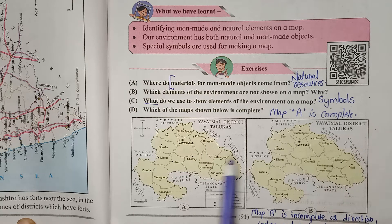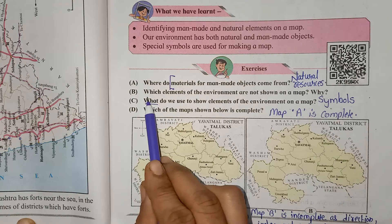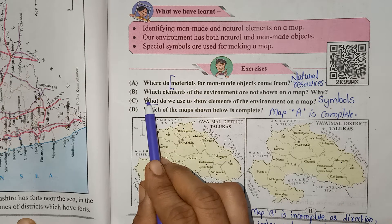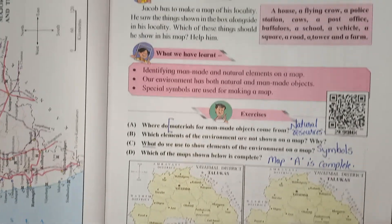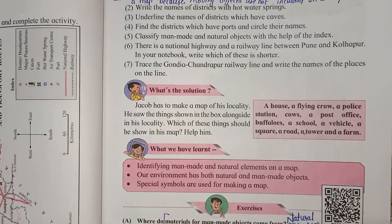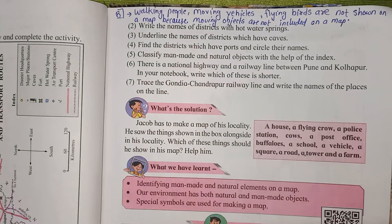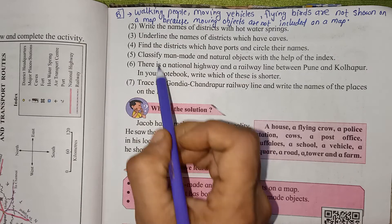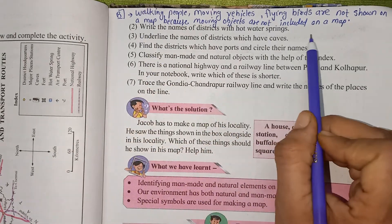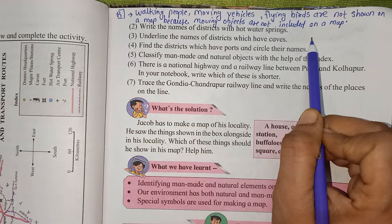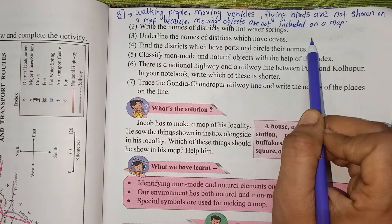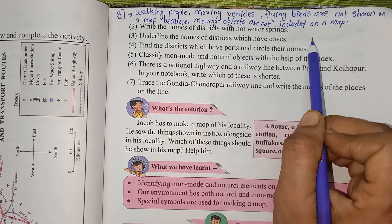Now we will see question B: Which elements of the environment are not shown on a map, and why? The answer is: walking people, moving vehicles, and flying birds are not shown on a map because moving objects are not included on a map.